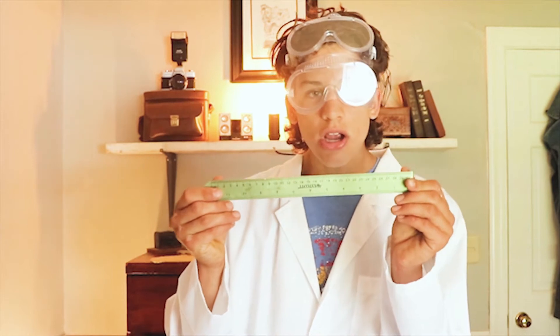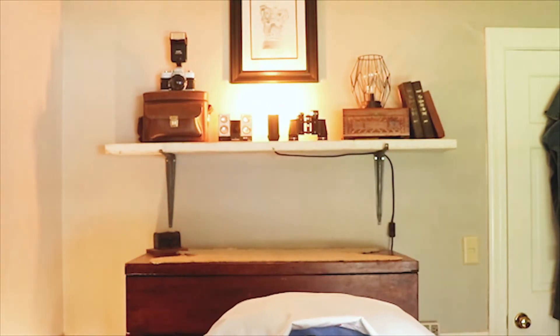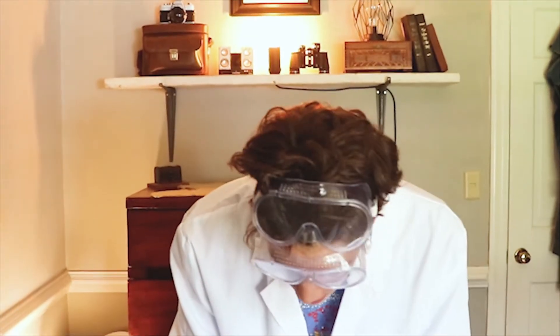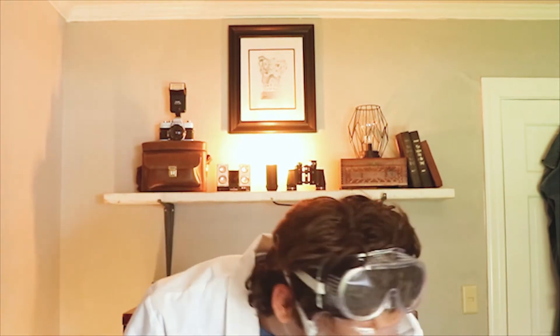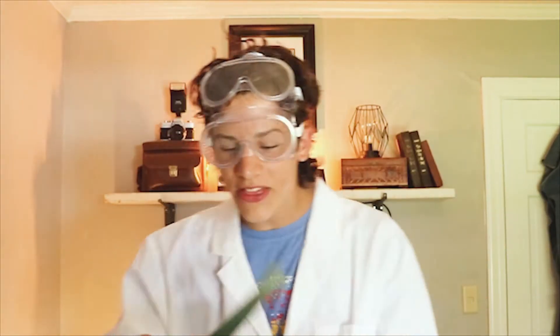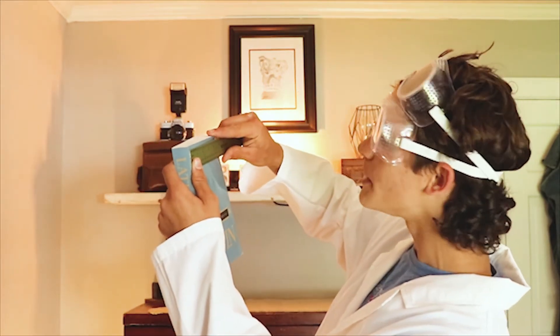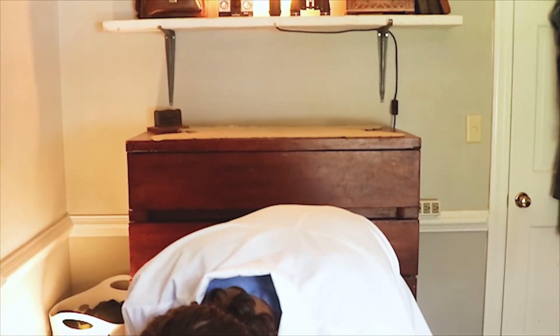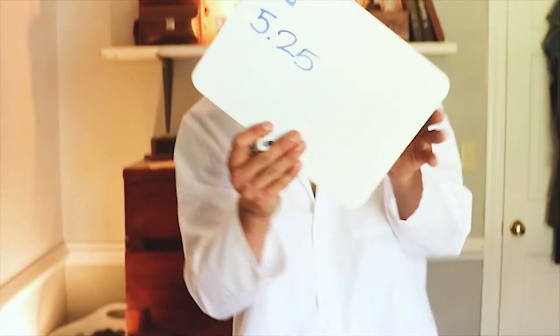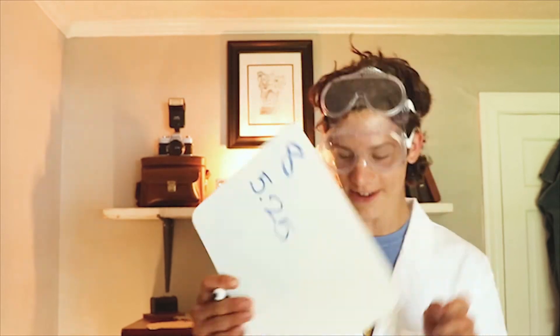The first thing we're going to do is lay our book on a flat surface. Today I'm using this wooden table. We're going to use the ruler and measure the length of the book. We see that the book is exactly eight inches. I'm going to write that down on my whiteboard. Next, we're going to measure the width of this book — we're at 5.25 exactly. So we have 5.25 and 8 as our two measurements.